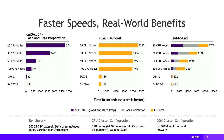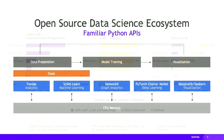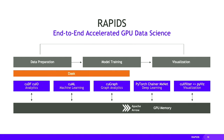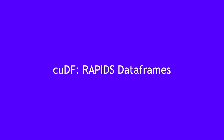None of this matters if you have to change your code, so the other main focus of RAPIDS is to accelerate familiar Python APIs. We build on the existing PyData open source ecosystem — libraries like pandas for analytics, scikit-learn for machine learning, NetworkX for graph analytics — and provide similar or compatible GPU-accelerated APIs wherever possible: cuDF for analytics, cuML for machine learning, and cuGraph for graph analytics.